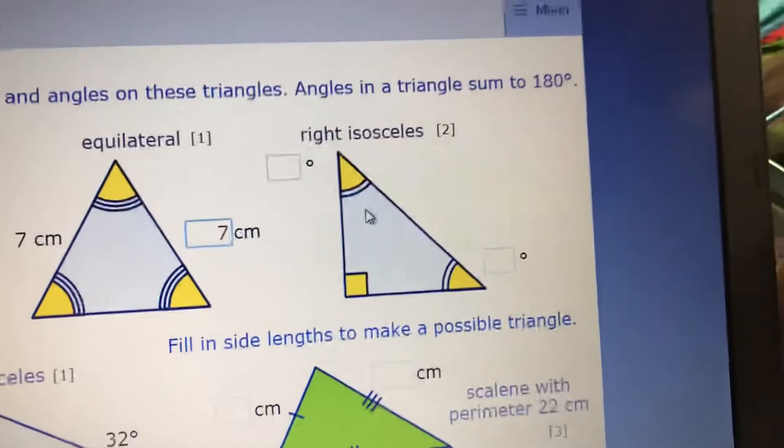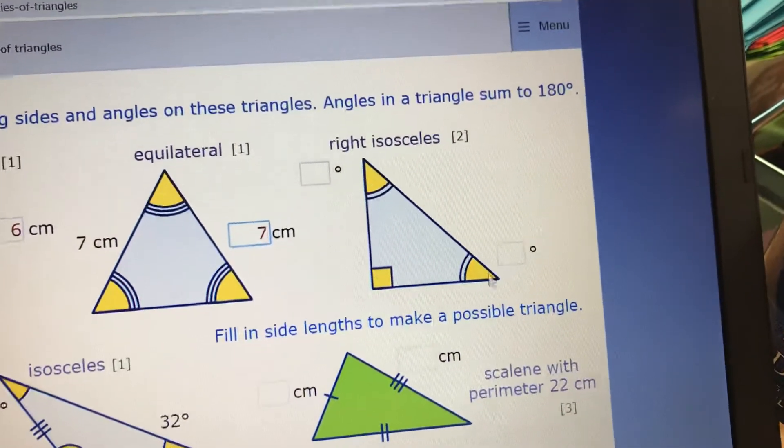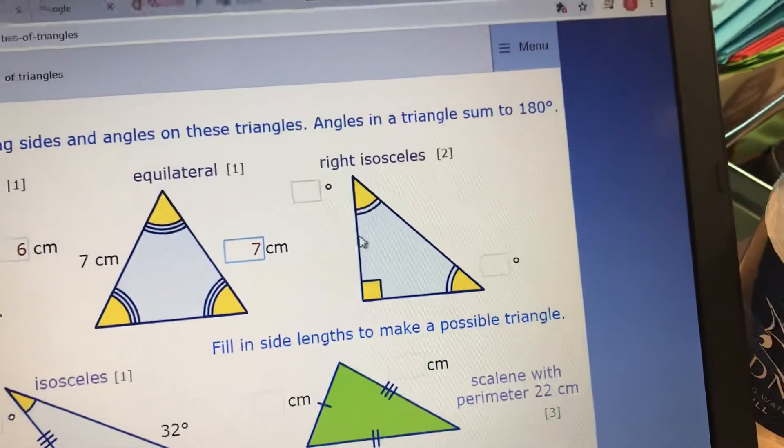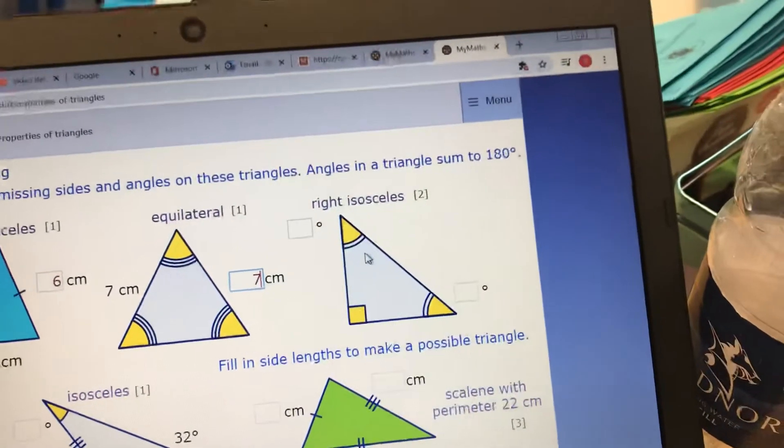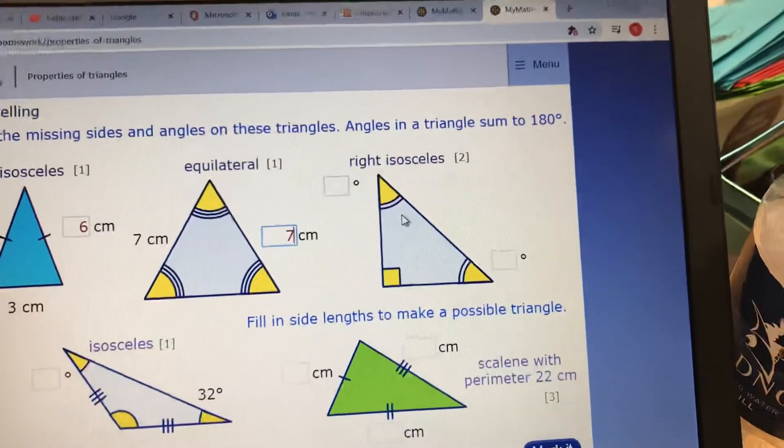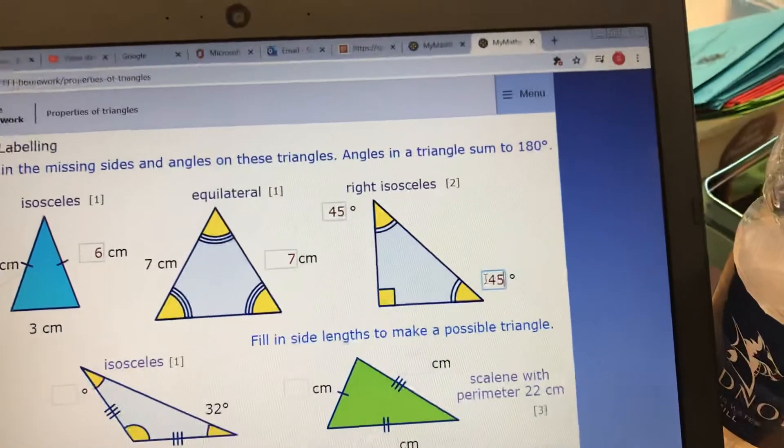This one's a little bit fun. Right isosceles is quite unique because we've got a 90 degree angle here. I know the whole thing adds up to 180. So I've got 90 degrees left to share between these two angles here. They're equal. Therefore I'm going to half it to make each angle 45 degrees. Fab.